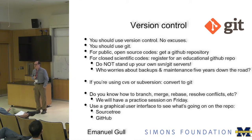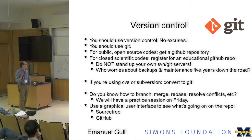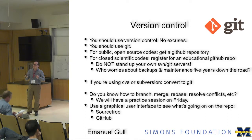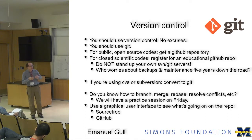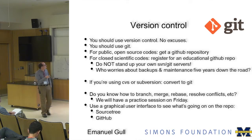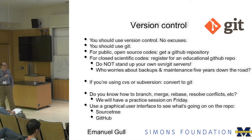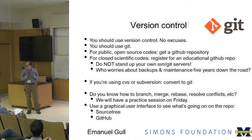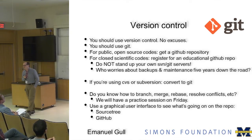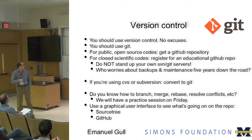Versioning control — if there's one thing I tell you, you should use versioning control. No excuses. It's a program that keeps track of changes to your program, allows you to go back in time to see when functionality still worked, and helps you develop. Git is the standard platform. For public open source codes, get a GitHub repository. For closed scientific codes, also get a GitHub repository — apply for an educational GitHub repo, it's free. That will keep your code safely backed up in the cloud. Please do not stand up your own servers — you don't want two years of work on a server in a basement that you forgot to back up, and then a fire starts.